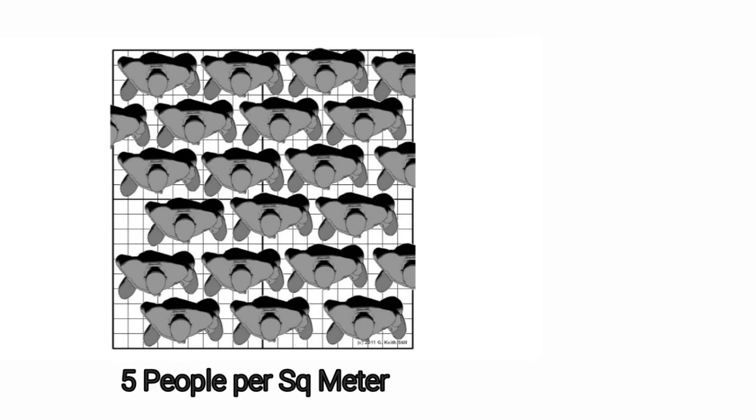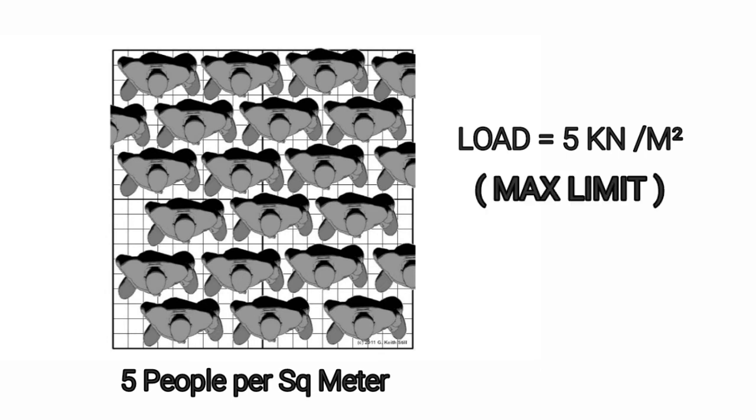Here we shall see 5 people per square meter, that is nothing but 5 kN per square meter. This load should be the upper limit for standing viewing spaces.